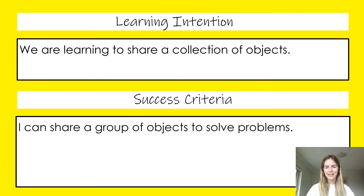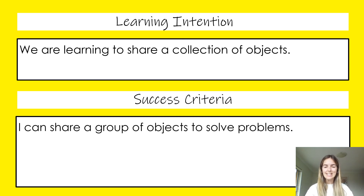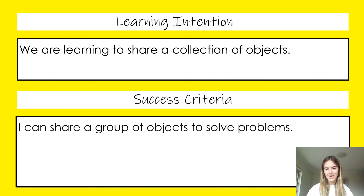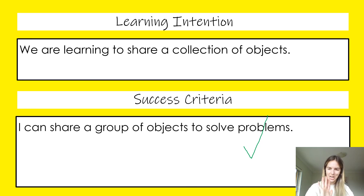Let's quickly go over our learning intention and success criteria to finish off our lesson. Our learning intention was that we are learning to share a collection of objects, and our success criteria was that I can share a group of objects to solve problems. We had our groups and we were sharing our circles between the groups, figuring out what amount each group had. Well done today everyone — I'm going to give us a big tick because you worked really hard. I hope you enjoyed today's lesson and I'll see you next time, bye!